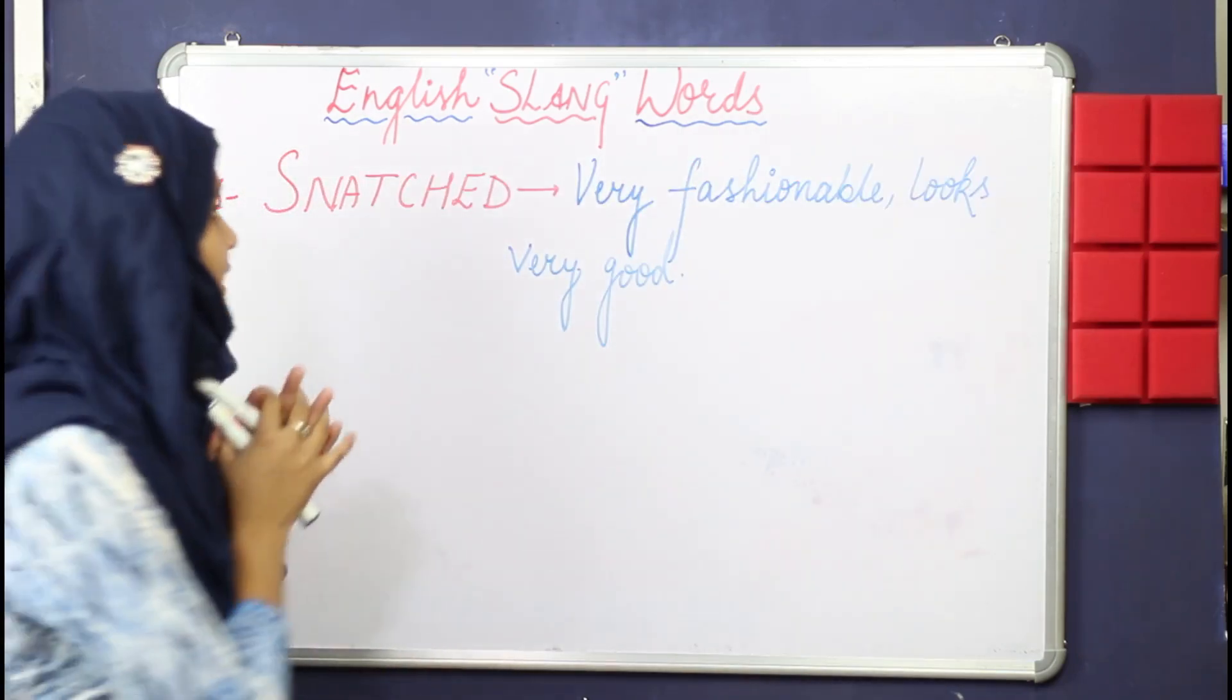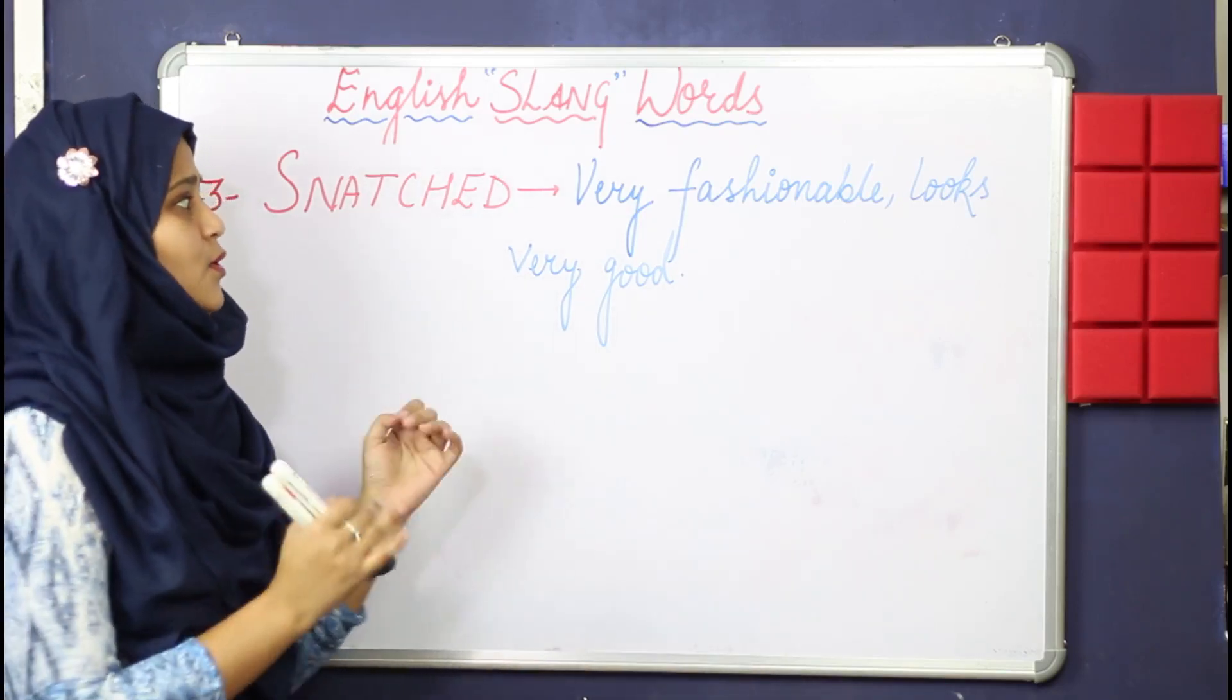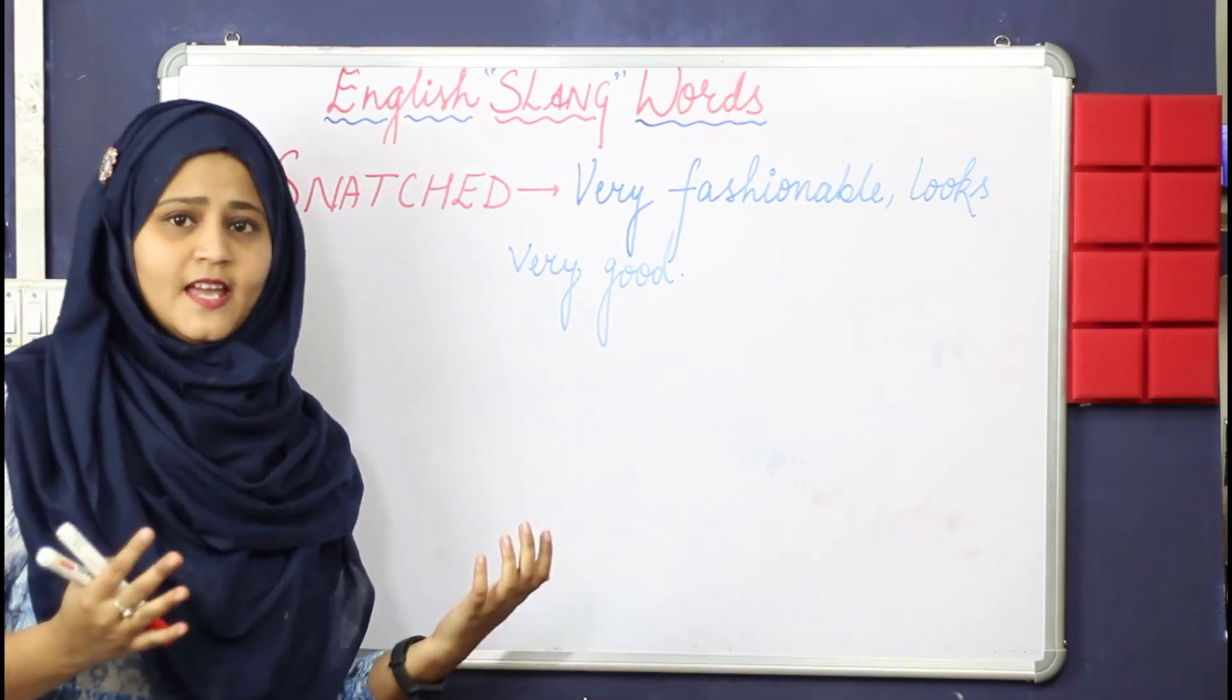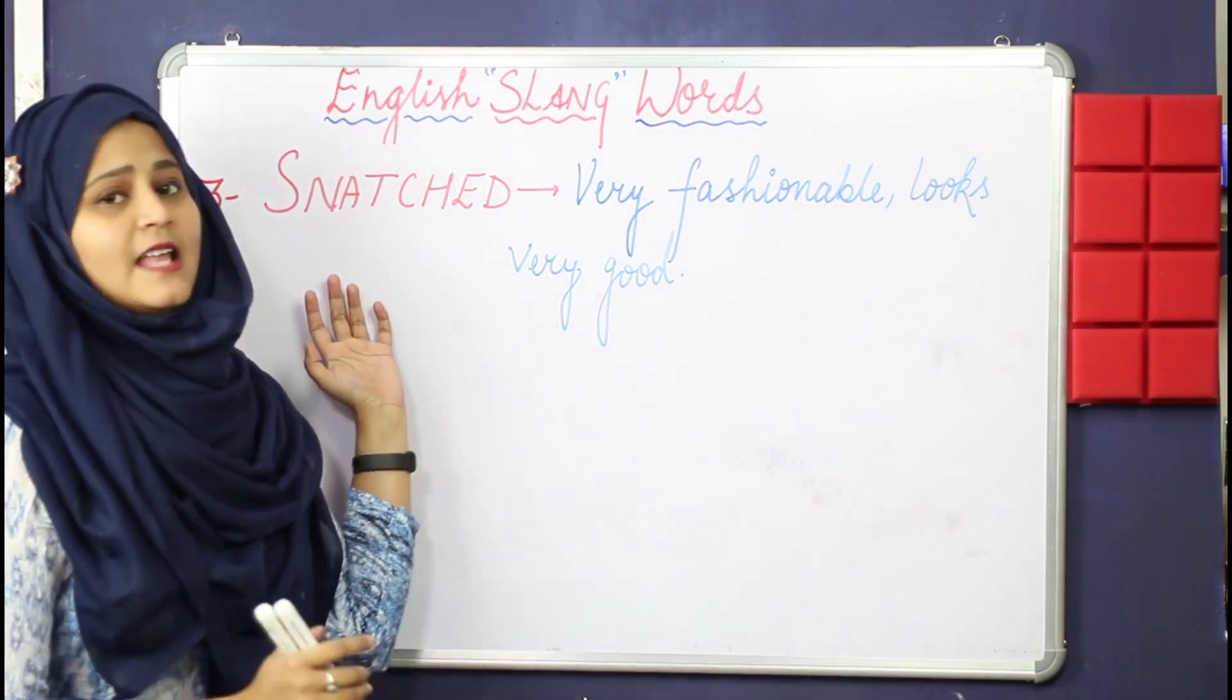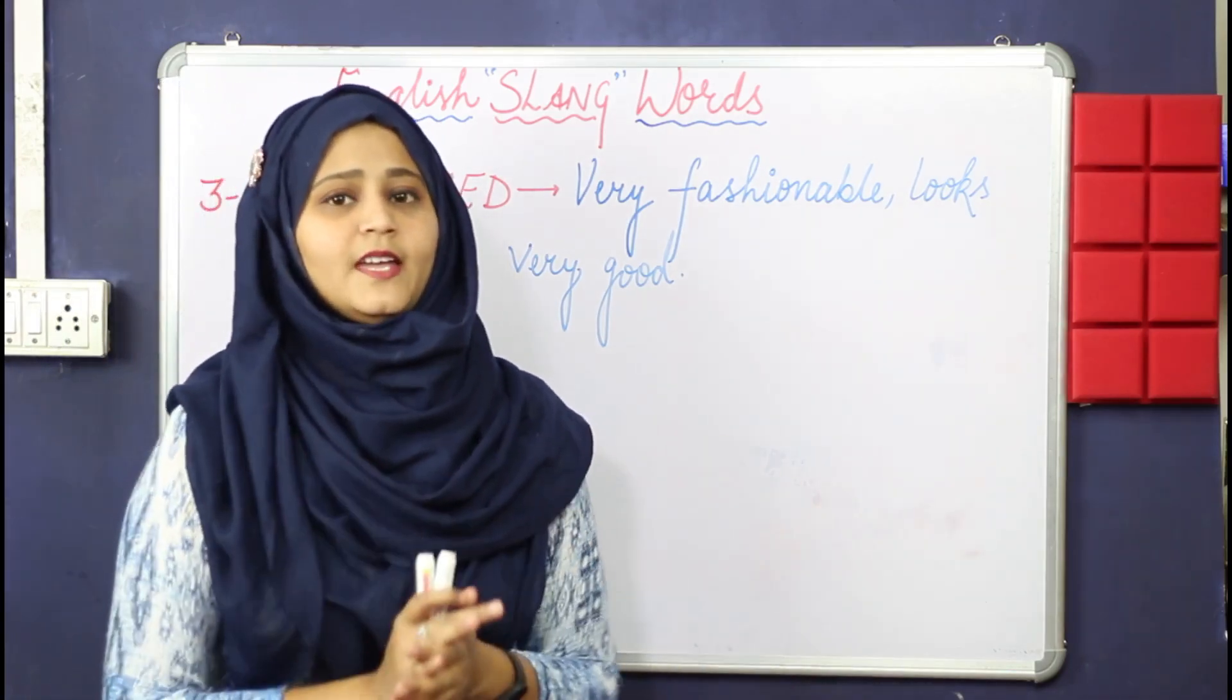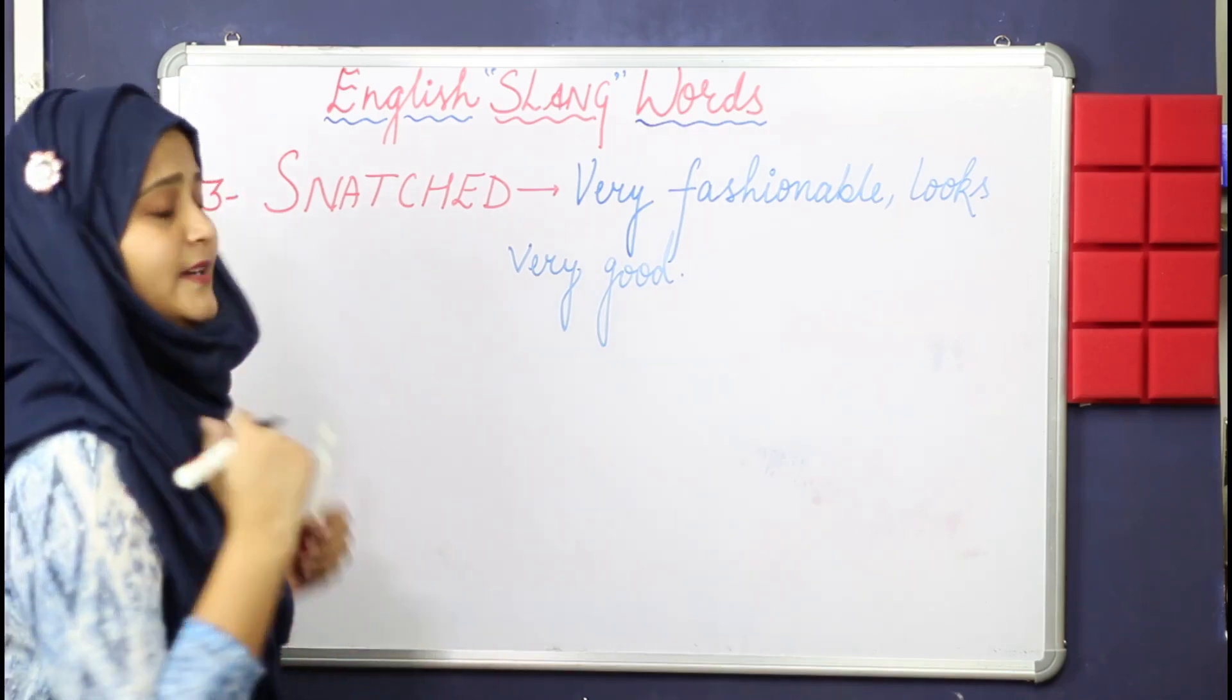So viewers, here we have third slang and the slang is snatched. Viewers, snatched which we use for something very fashionable or looks very good. If you are wearing some fashionable things or fashionable dresses, we can express those things, you can use snatched slang. For example, whatever I am wearing right now, this dress is snatched. So I am going to write this example for you so you can take a screenshot and understand it better.